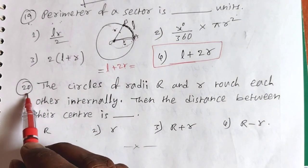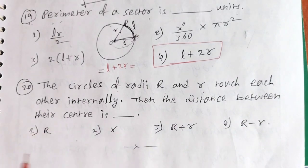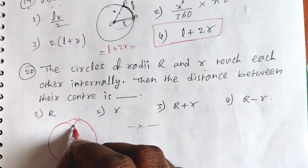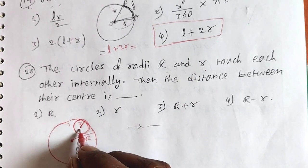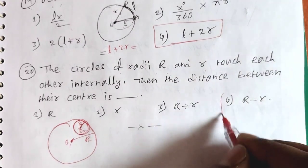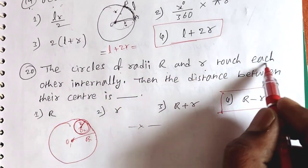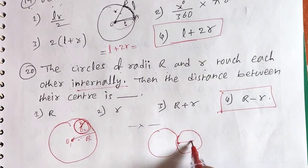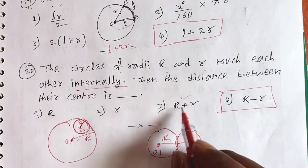Last question: Two circles of radii R and r touch each other internally. Then the distance between their centers is what? For internally touching circles, the distance O1O2 equals capital R minus small r. The fourth option is the answer. For externally touching circles, the distance O1O2 equals R plus r.